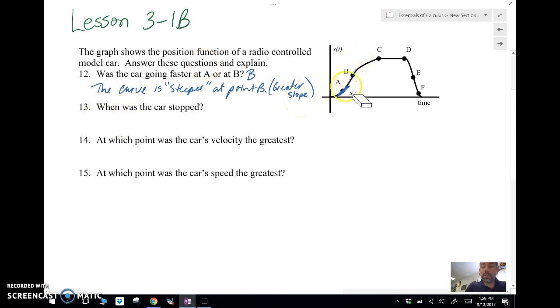When was the car stopped? Well, the car stopped when the slope is zero, or when there is no velocity, and the slope is zero right here between C and D. So we're going to say between C and D. Why? Because slope is zero, or we could say the velocity is zero.